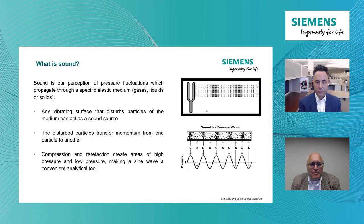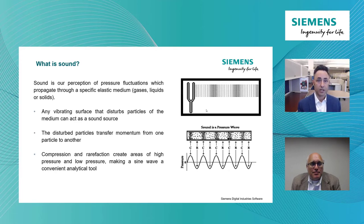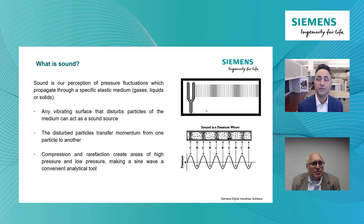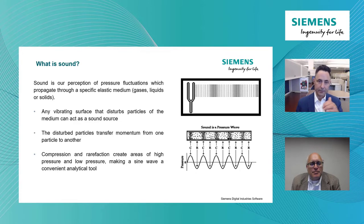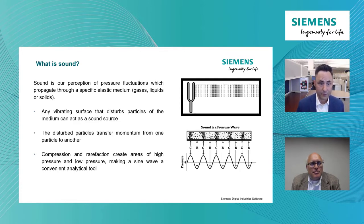We have particles getting closer together, which causes the pressure to increase, and then particles spreading apart, which causes the pressure to locally decrease. This oscillation makes a sine wave a very useful analytical tool to describe and analyze sound waves. If you look at this sine wave, you see the areas of pressure increasing where the particles are coming together, and then the valley where the particles are stretched apart. We use the sine wave to analytically describe sound waves and analyze them from a frequency perspective.